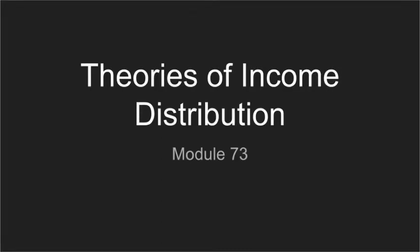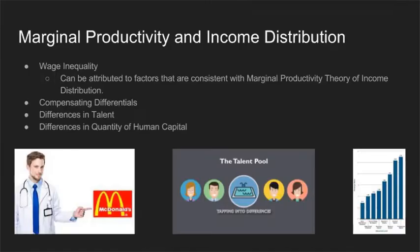In this video, we will be looking at theories of income distribution and why people are paid how they are paid. The marginal theory of income distribution states that the division of income among the economy's factors of production is determined by each factor's marginal revenue product at market equilibrium.